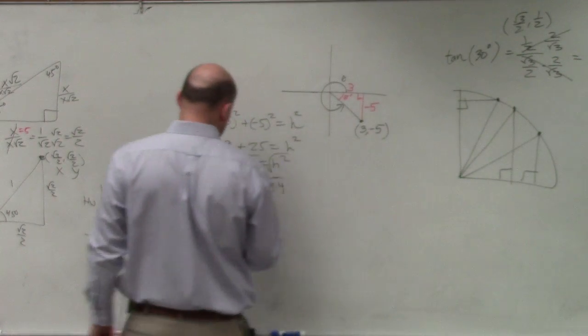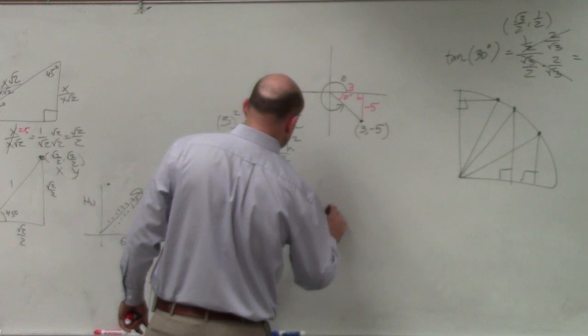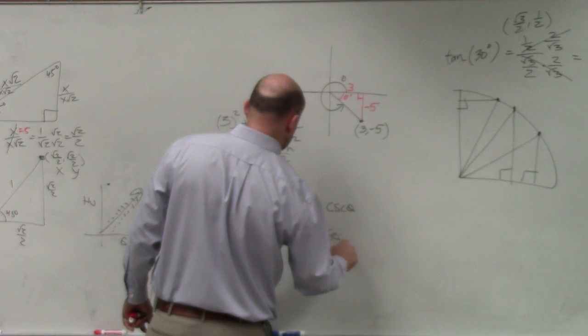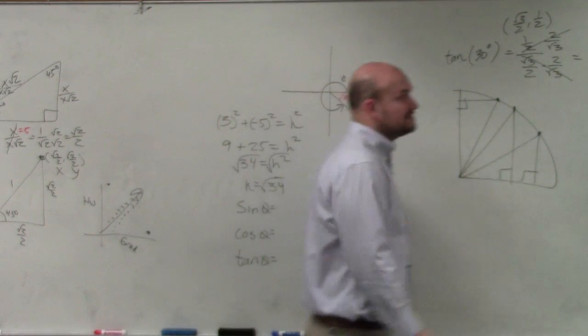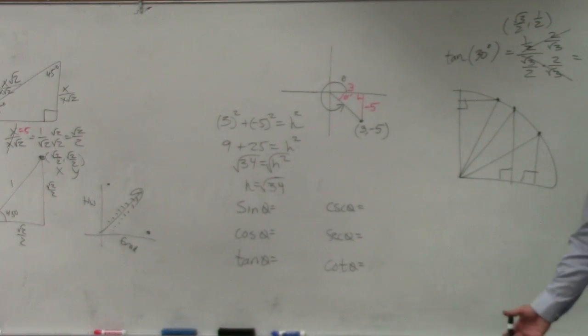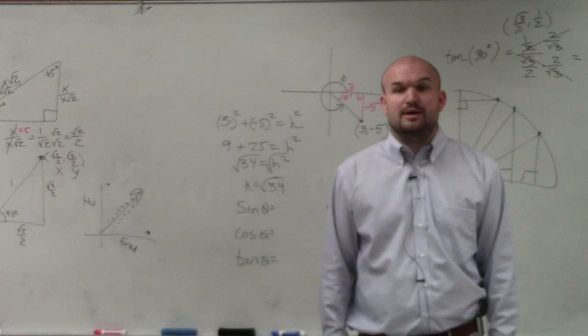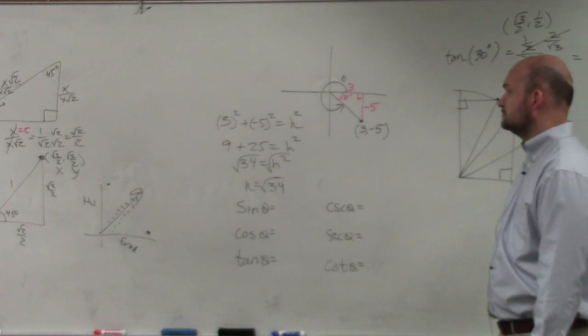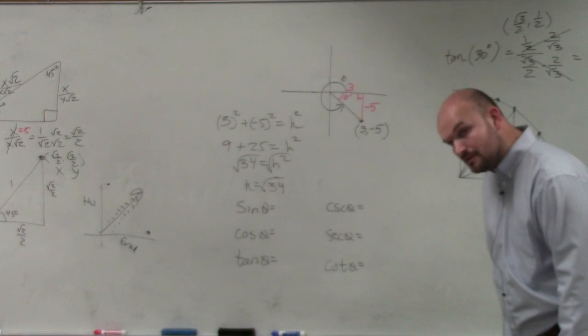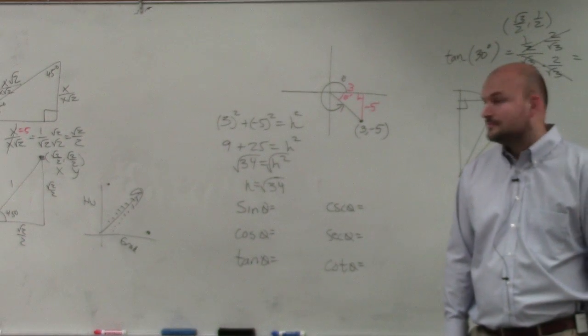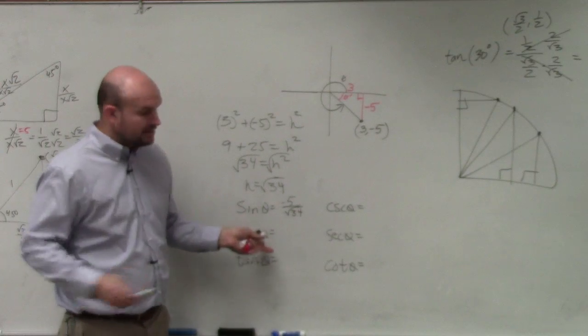So the next thing is I'm just going to take my trigonometric functions and create my ratios. Matilda, what would my sine be? Can you put that away, please? Just away. Negative 5 over the square root of 34. Right, it's also written up there on the board.